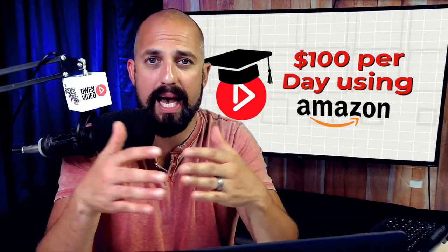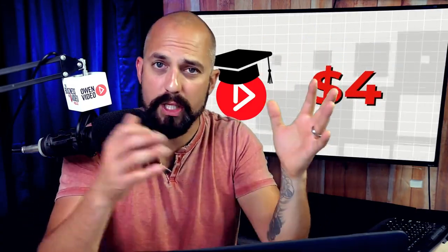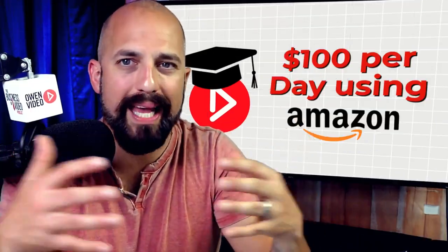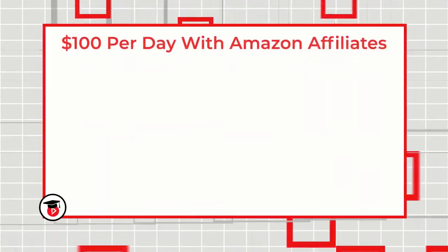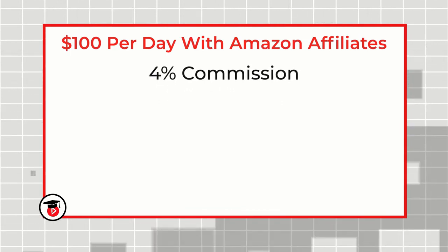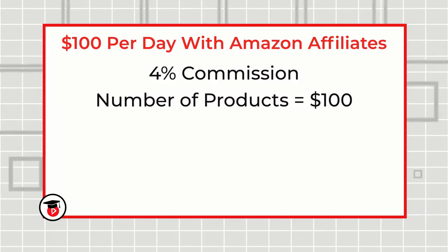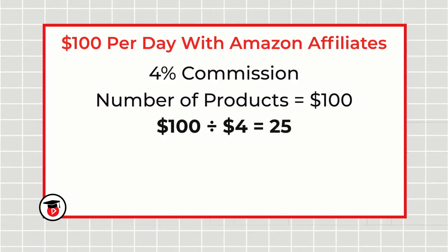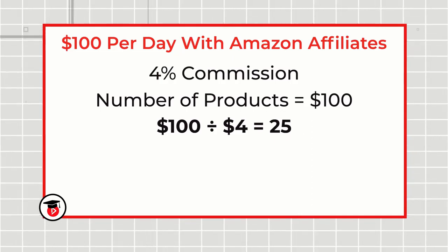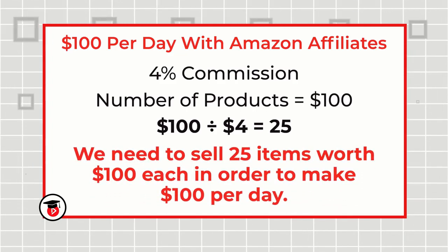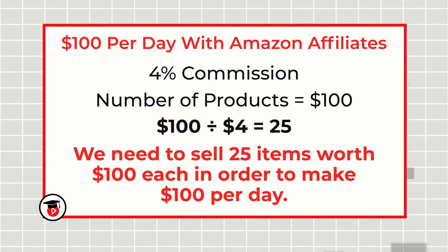For example, if you sell a product that is $100, your commission is going to be $4 on that. So how do you make $100 per day? It comes down to that blueprint equation. At 4% commission, you need to find out how many products you need to sell in order to equal $100 per day. We take $100 and divide it by $4, which gives us 25 — meaning you've got to sell 25 $100 items at 4% commissions in order to make $100 per day on Amazon.